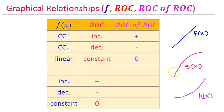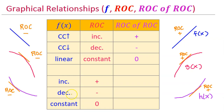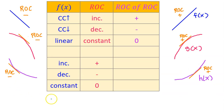Function f is linear, function g is concave down, and function h is concave up — however, all three are increasing left to right. When a function is increasing, its rate of change is always positive, because the slope of the tangent line is always positive. Similarly, if a function is decreasing, the rate of change is negative. If a function is neither increasing nor decreasing — a horizontal line — the rate of change is zero.